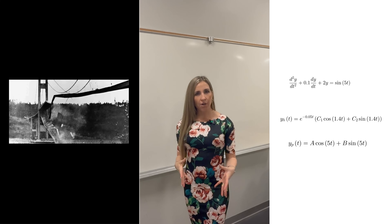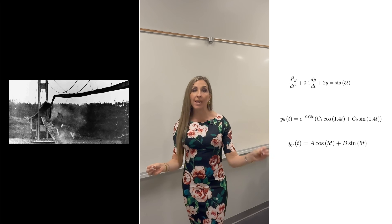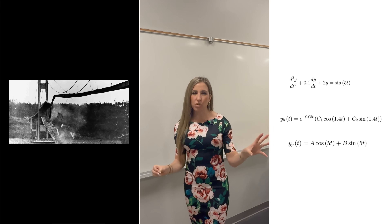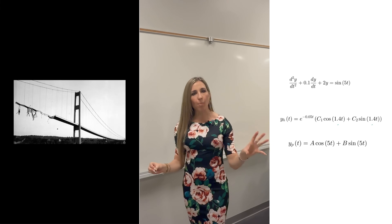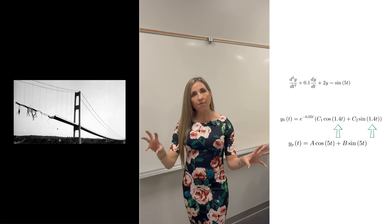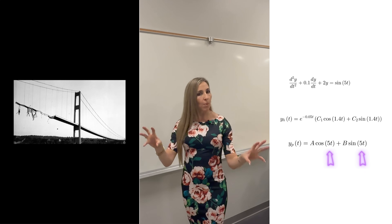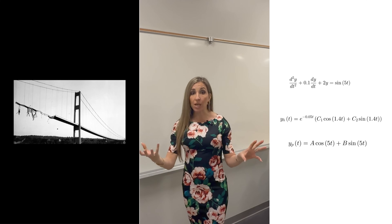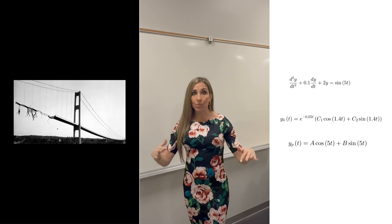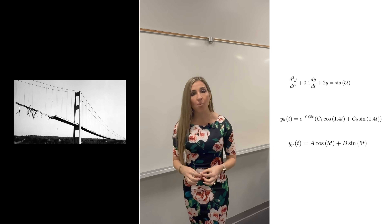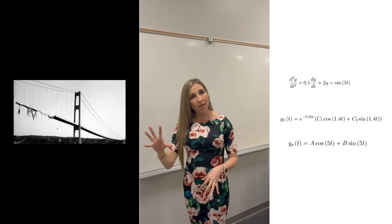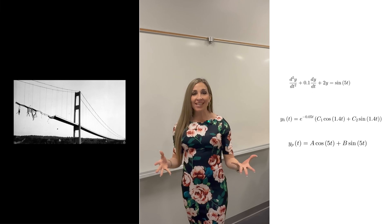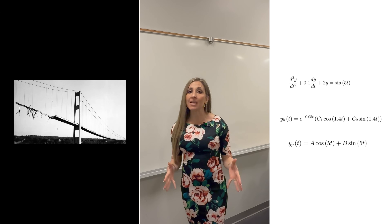For resonance to occur, the forcing frequency needs to match the natural frequency. In this example, the natural frequency from the homogeneous solution is approximately 1.4 hertz, and the forcing frequency from the particular solution is 5 hertz — so in this case, resonance does not occur. But if the wind had a frequency closer to 1.4 hertz, the oscillations would amplify. And that's exactly what happened with the Tacoma Narrows Bridge: the actual wind force frequency matched the bridge's natural frequency, causing oscillations to grow uncontrollably and leading to collapse.